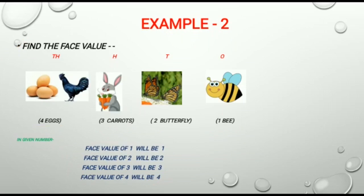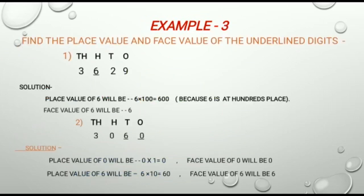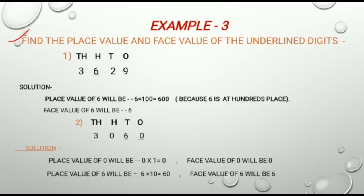Let us see another example. In this example, we have to find out the place value and face value of the underlined digits. Here, the first part is 3629. In this number, the underlined digit is 6 which is at 100's place. So the place value of 6 will be 6 multiplied by 100 is equal to 600.